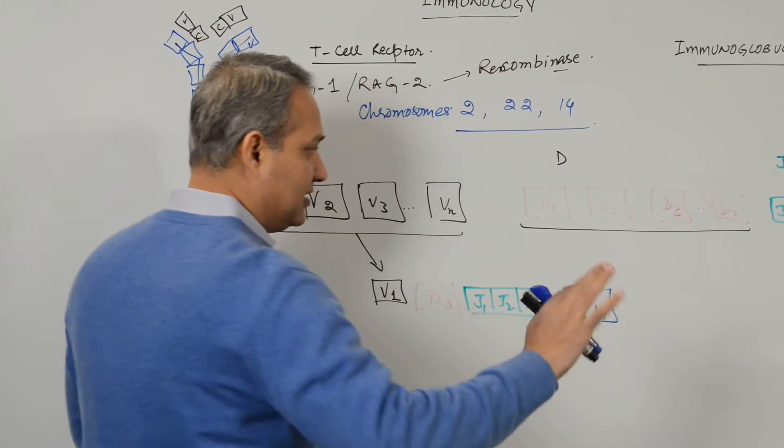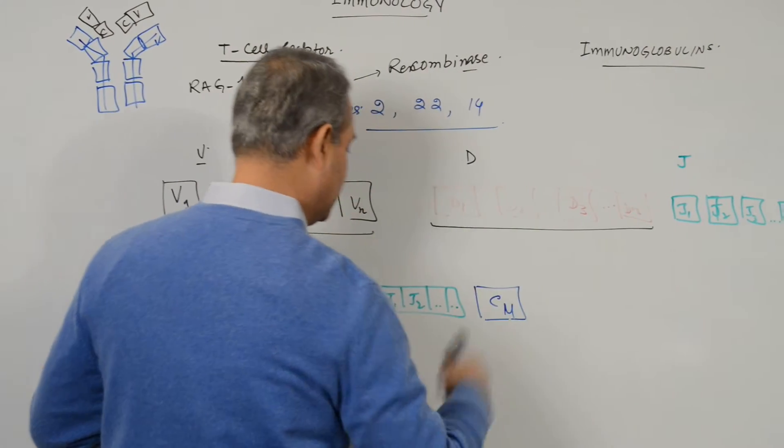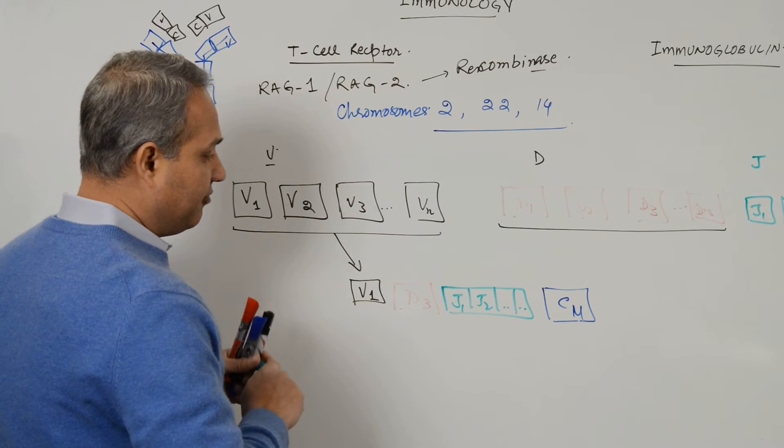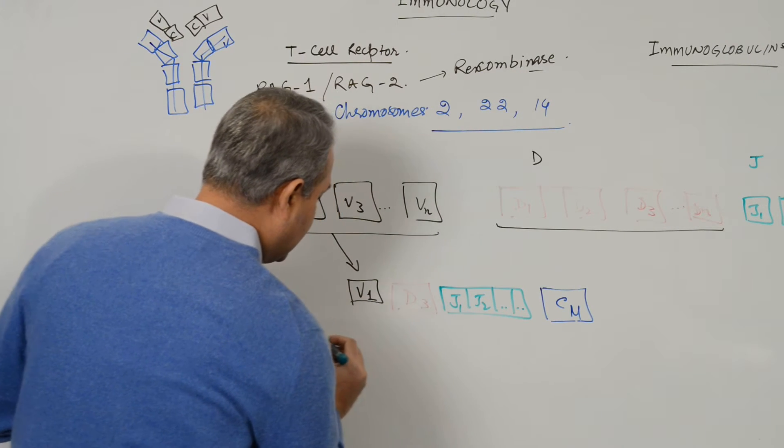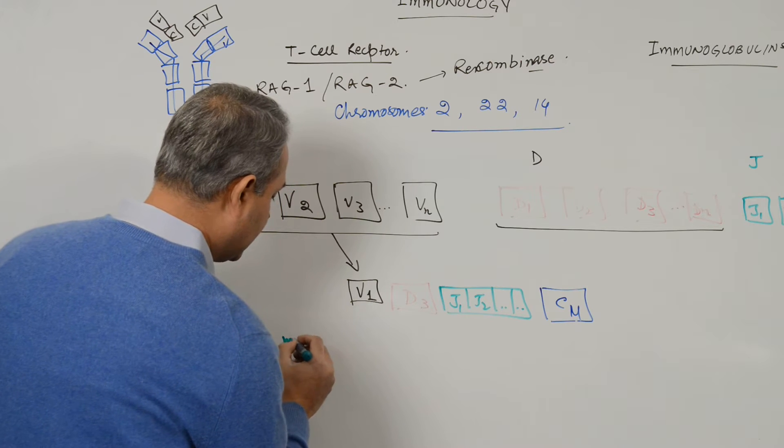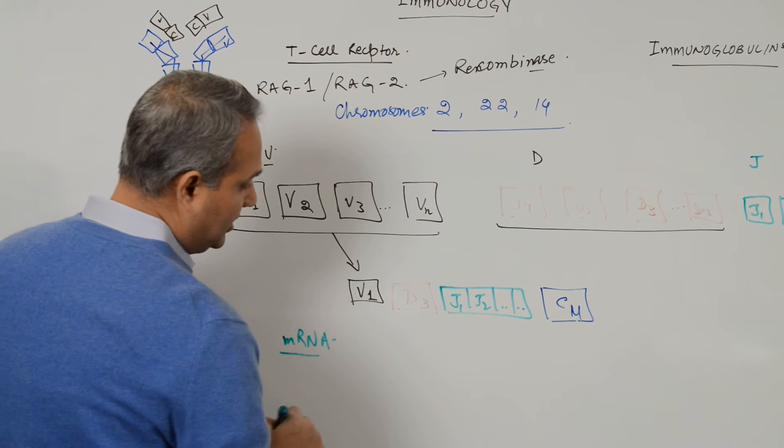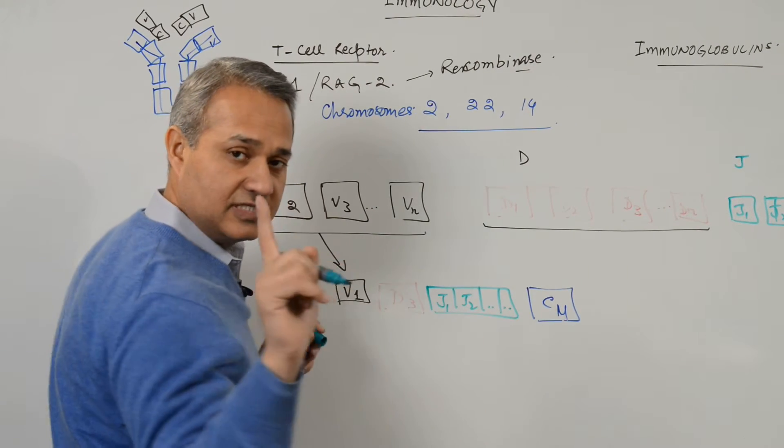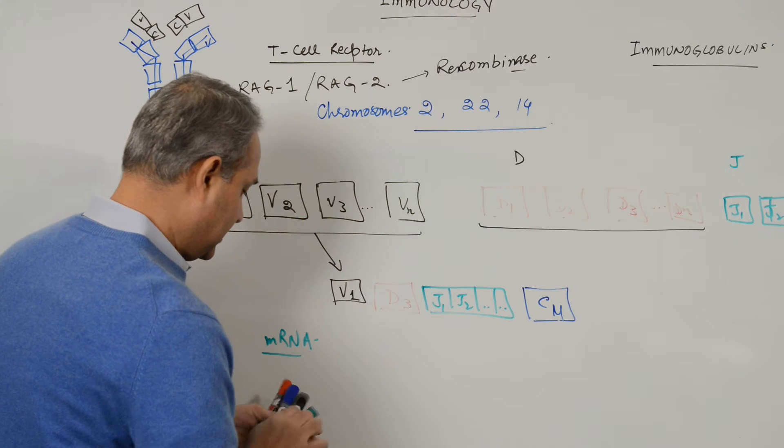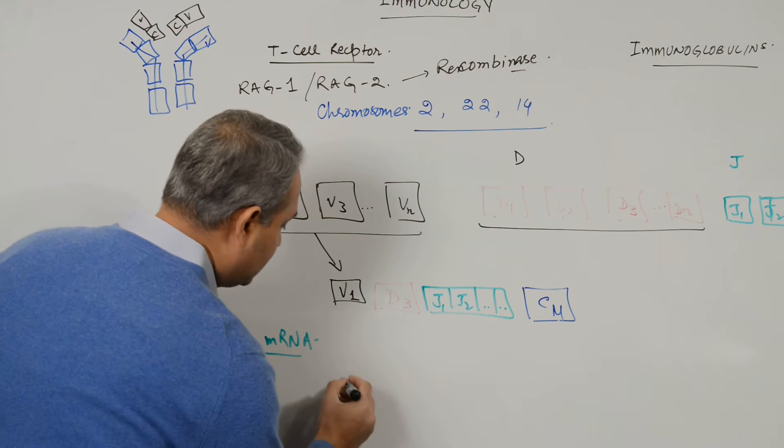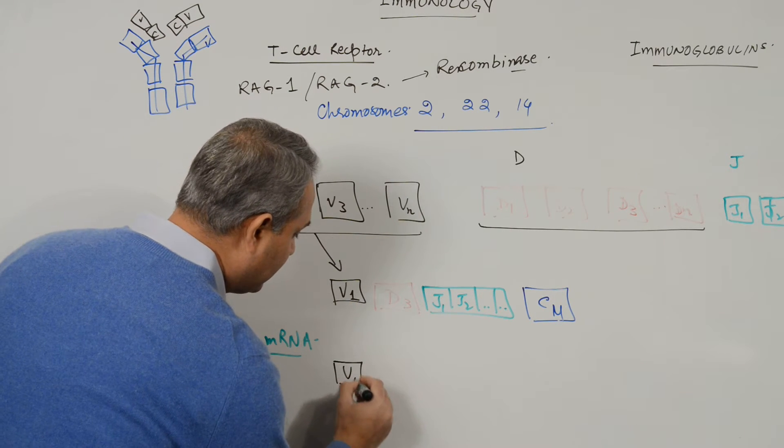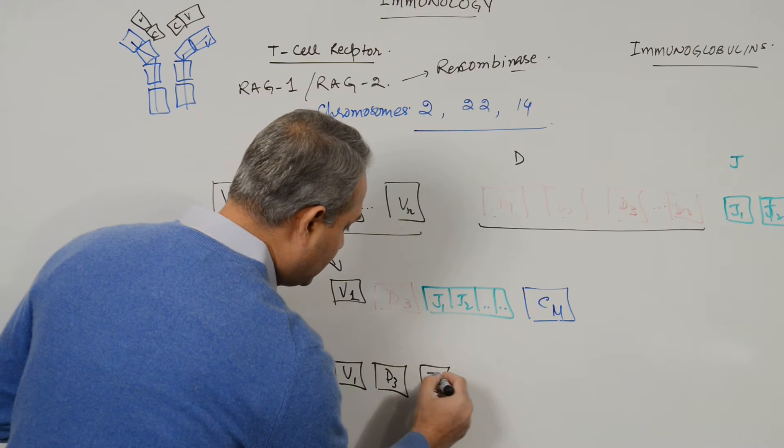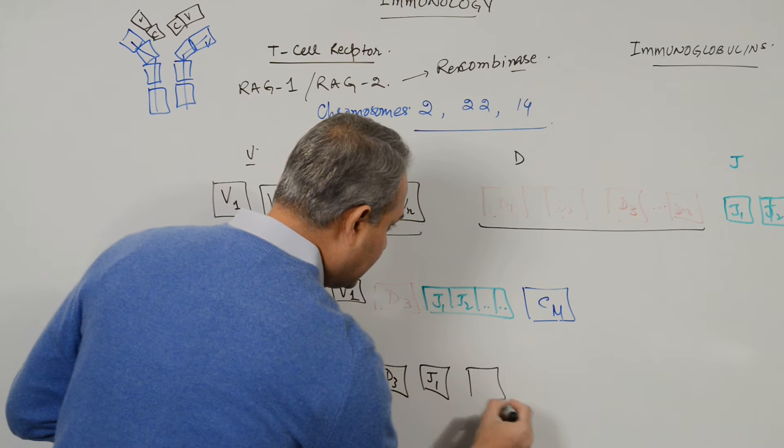So anyways, regardless of that point, let's say we got the mu gene. Now what will happen is we will create the RNA from here, so we will make a messenger RNA, but we would splice off all the J's and we will just keep one. So the messenger RNA which you will see will have transcription with V1, D3, let's say J1 in my case and then C mu.